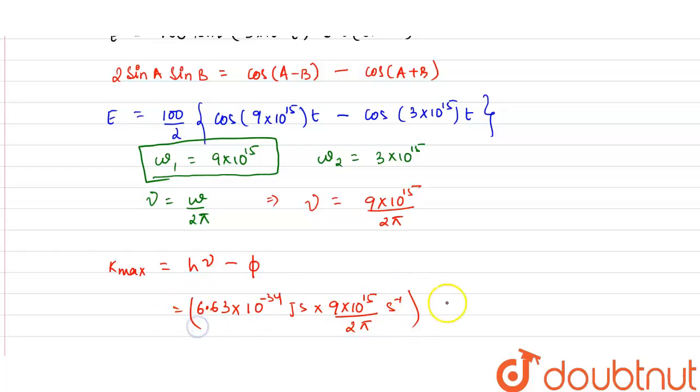minus phi, that is the work function that is given to us is 2 into 1.6 into 10 raised by minus 19. So this will come in joules.